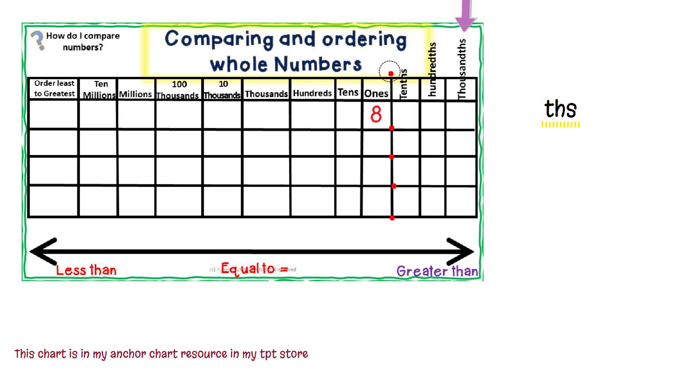The correct way to read this decimal number is 8.745. Looking at our place value chart, there are 8 ones, 7 tenths with a THS at the end, 4 hundredths, and 5 thousandths.